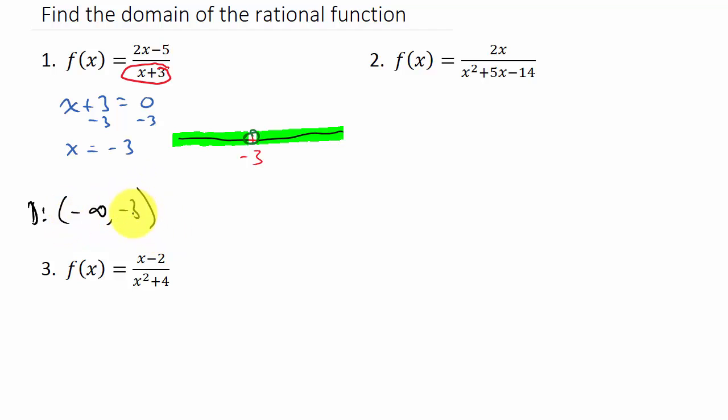The way we would write that is the domain is everything from negative infinity up to negative 3, and the negative 3 is going to have a parenthesis on it because it's not included, or everything from negative 3 with a parenthesis because it's not included to positive infinity. This is how you would write your domain in interval notation.